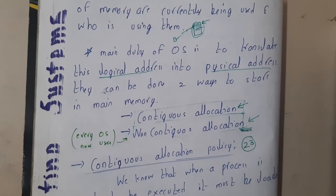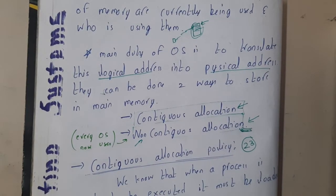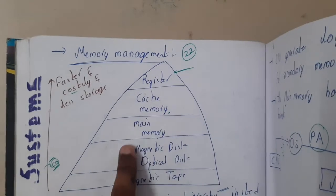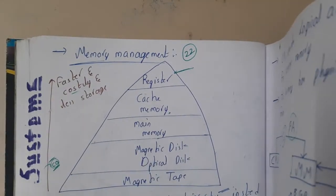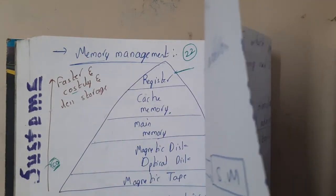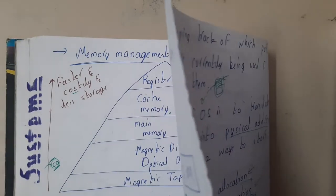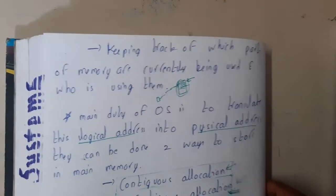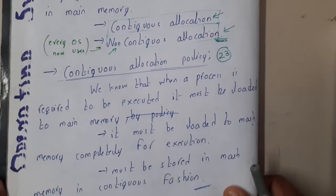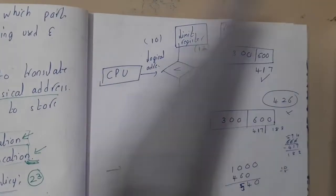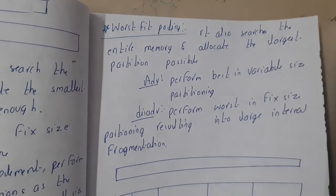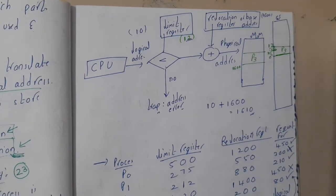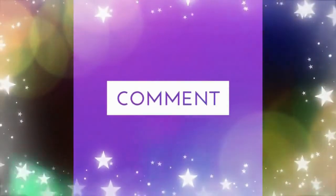In reality, our systems use non-contiguous allocation. We'll discuss the disadvantages and details in future lectures. I hope everyone got a clear idea of memory management. I'll share the link to the computer organization memory hierarchy video in the description — it's the second video in the course. In the next lecture, we'll continue with the contiguous allocation policy, discussing best fit, first fit, and worst fit. Thank you — like, share, and subscribe for more videos.